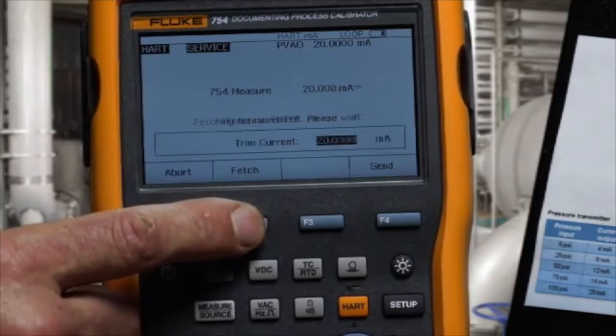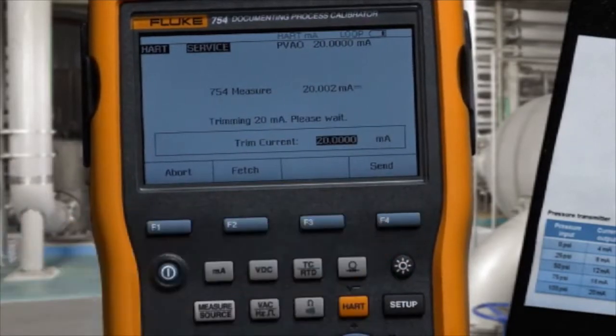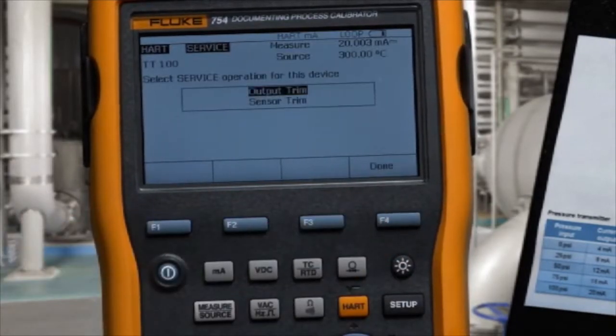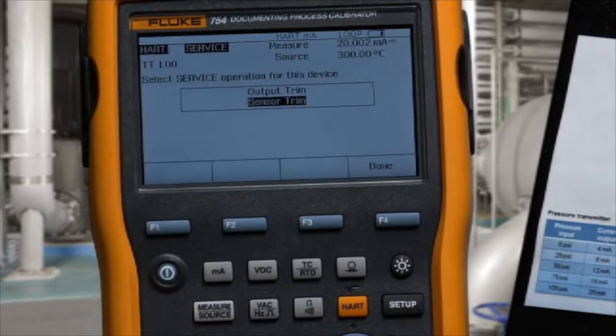Then we'll fetch the 20 milliamp value and press send to adjust. Next, we'll perform an adjustment on the input of the transmitter.